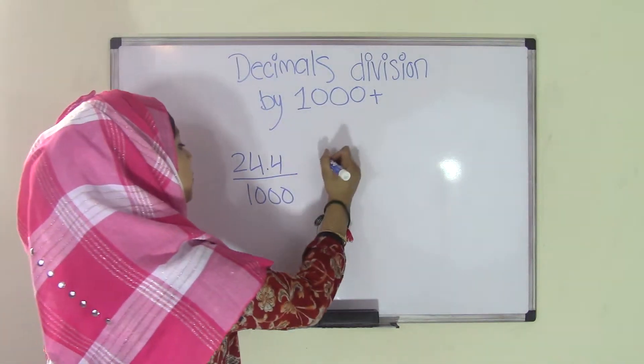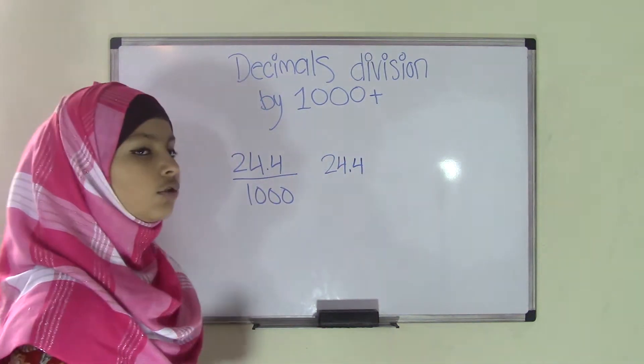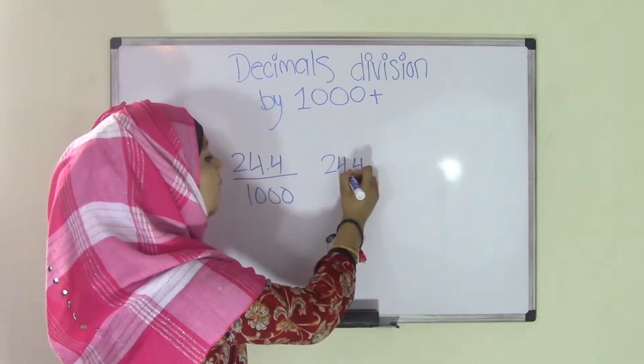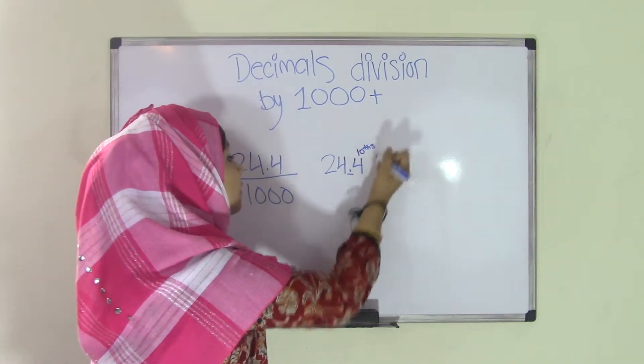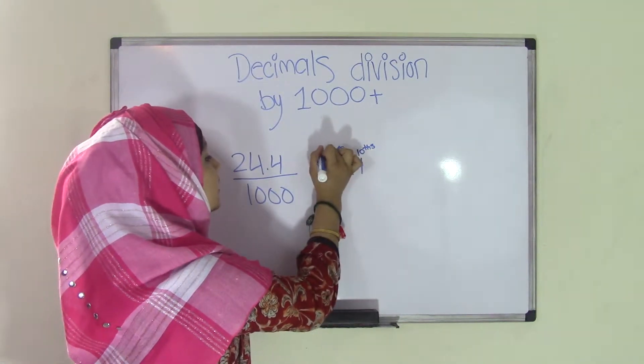So you take your decimal number, 24.4, and you're going to identify the place value for each of these. The 4, which is right after the decimal point, is going to be in the tenths place. The 4 is going to be in the ones place, and the 2 is going to be in the tens place.